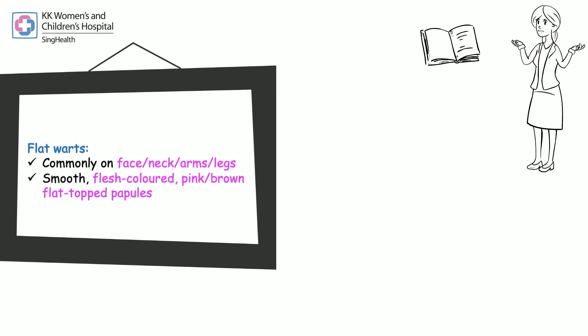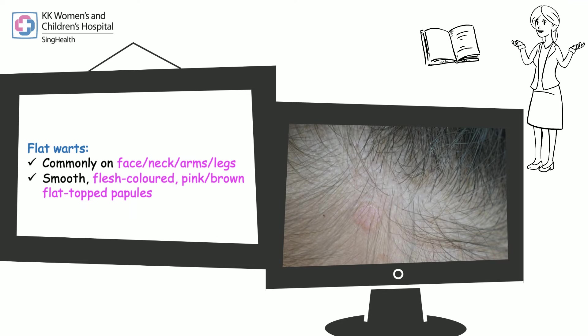Flat warts are commonly found on the face, neck, arms or legs. They are smooth, flesh-colored, pink or brown flat-topped papules.